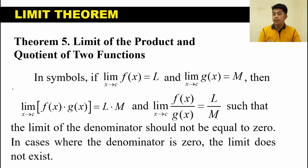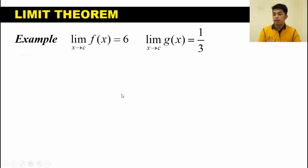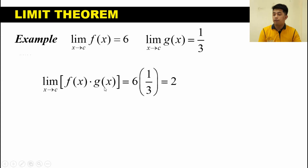To understand this theorem, let's have a simple example. The limit of F of X as X approaches C is equal to 6, and the limit of G of X as X approaches C is equal to 1 third. If we are asked to solve for the limit of the product of F of X times G of X as X approaches C, we multiply their individual limits: 6 times 1 third equals 6 over 3 equals 2. Therefore, the limit of F of X times G of X as X approaches C is equal to 2.